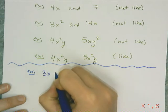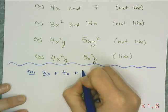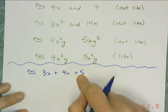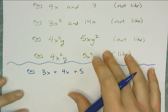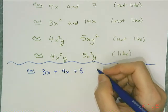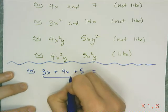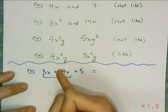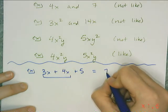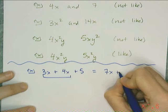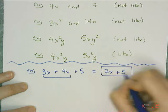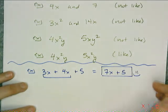So if I have 3x plus 4x plus 5, pause it and see if you can combine the like terms on your own and see if you can get the same answer I get. I can only combine the things that are like. 3x and 4x are like. So I add the coefficients. I have 3x and 4x which means I get a total of 7x. 5 can't be combined with it. So I get 7x plus 5. And that's my answer.